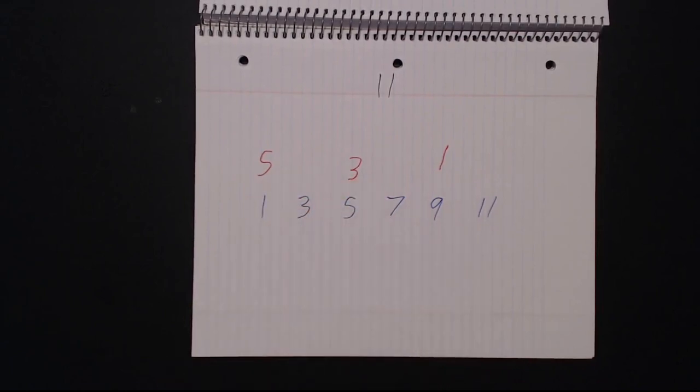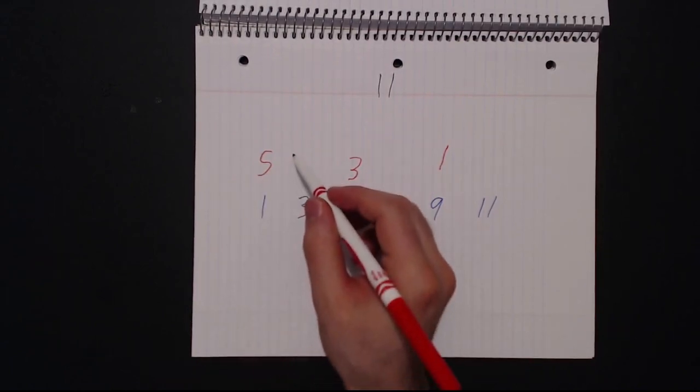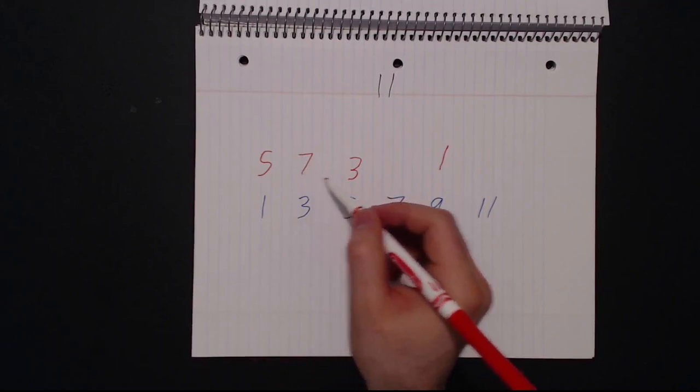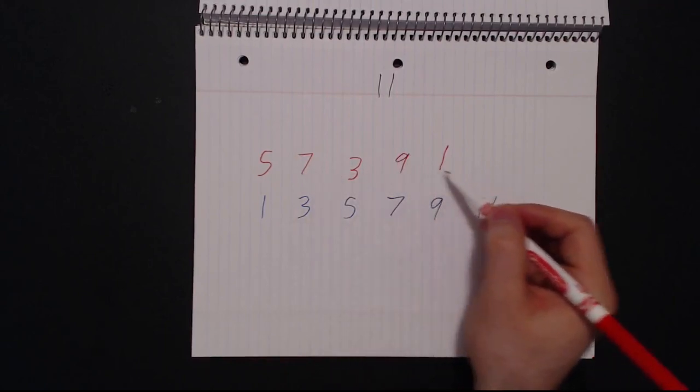Now that we've reached the end, we change direction. Next after 5 is 7. Continuing the odd numbers, we have 9 and then 11.